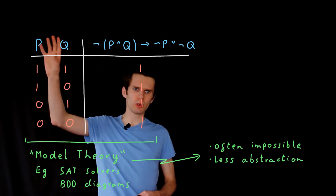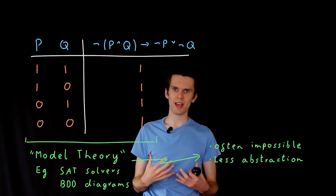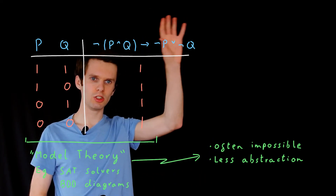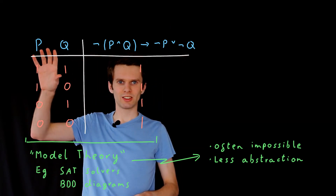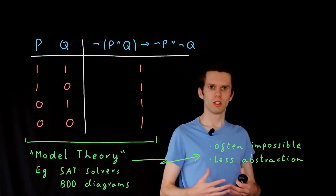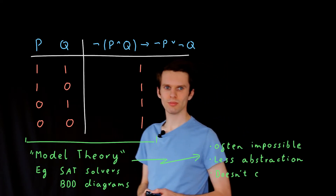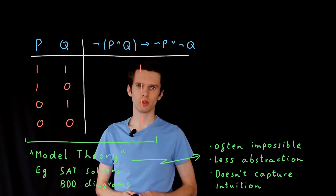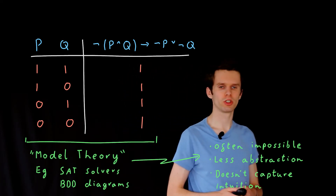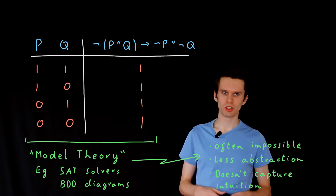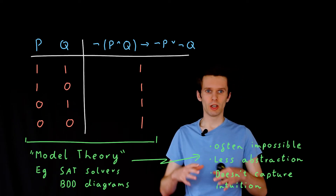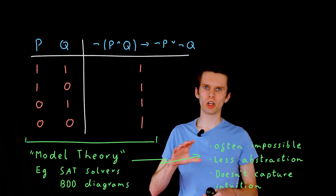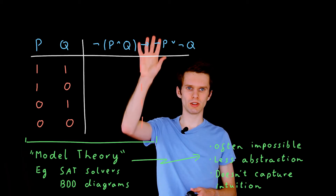A second issue is that when we were thinking about defining symbols, we were abstracting away from the real world — we didn't want to deal with the complexities of natural language, so we represent things using letters. But now we're testing every possible interpretation of those letters, rolling back on our abstraction. And finally, this method doesn't really capture the intuition behind the rules we looked at in the semantics — it's a bit of a brute force approach. So what we do is define a deductive system, which constrains the set of sentences in the syntax that we are allowed to write down, such that we are only allowed to write down the true, valid sentences.